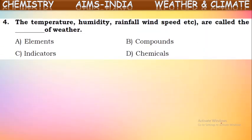Temperature, humidity, rainfall, wind speed, and wind direction are called components of weather or elements of weather. These give information about the weather in a particular place at a particular time. That is why they are called elements of weather.